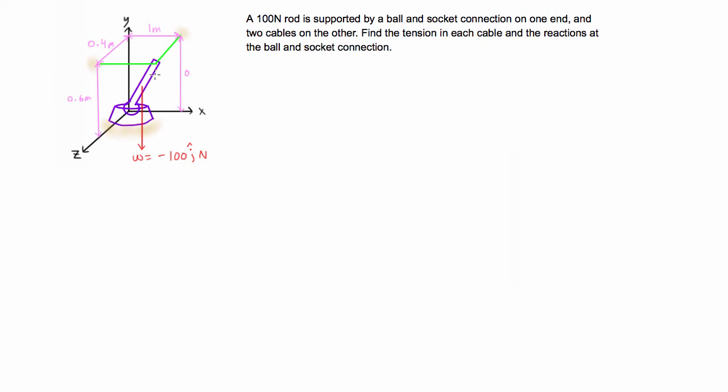In this case we have a 100 newton rod. On one end it's supported by a ball and socket connection and on the other end there's two cables that are connecting it to some walls. You'll notice that this cable here is parallel to the x-axis and this cable here is parallel to the z-axis. What we want to do is find the tension in each cable and then we also want to find all of the reactions at the ball and socket connection.